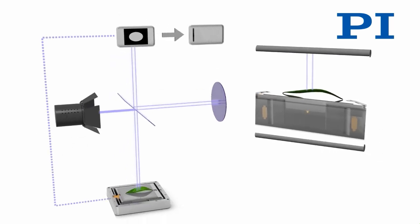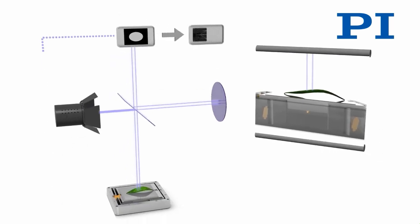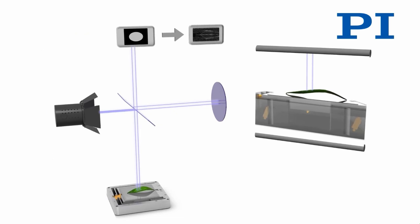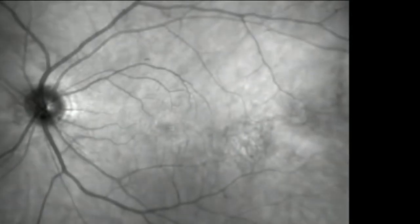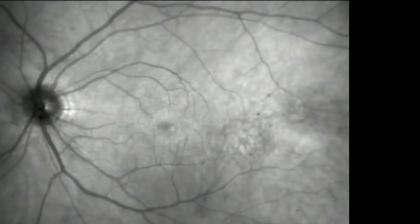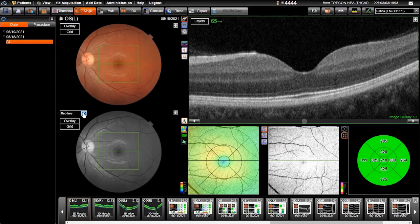The full-field OCT optical setup includes components such as a superluminescent diode, convex lens, 50-50 beam splitter, camera objective, CMOS DSP camera, and reference and sample. The camera functions as a two-dimensional detector array, and with the OCT technique facilitating scanning in depth, a non-invasive three-dimensional imaging device is achieved.